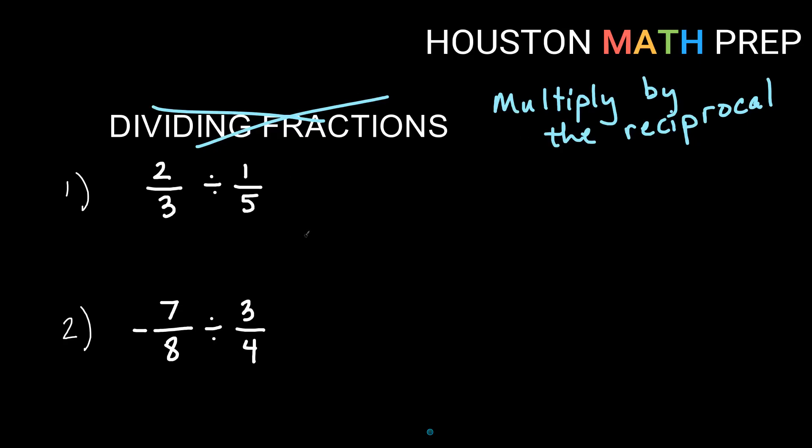So in this first one, we have two-thirds divided by one over five, so what we want to do is change that problem into two-thirds multiplied by the reciprocal times five over one. We're always going to multiply by the reciprocal of the second fraction. Divided by one-fifth, change the second fraction, so times five over one.